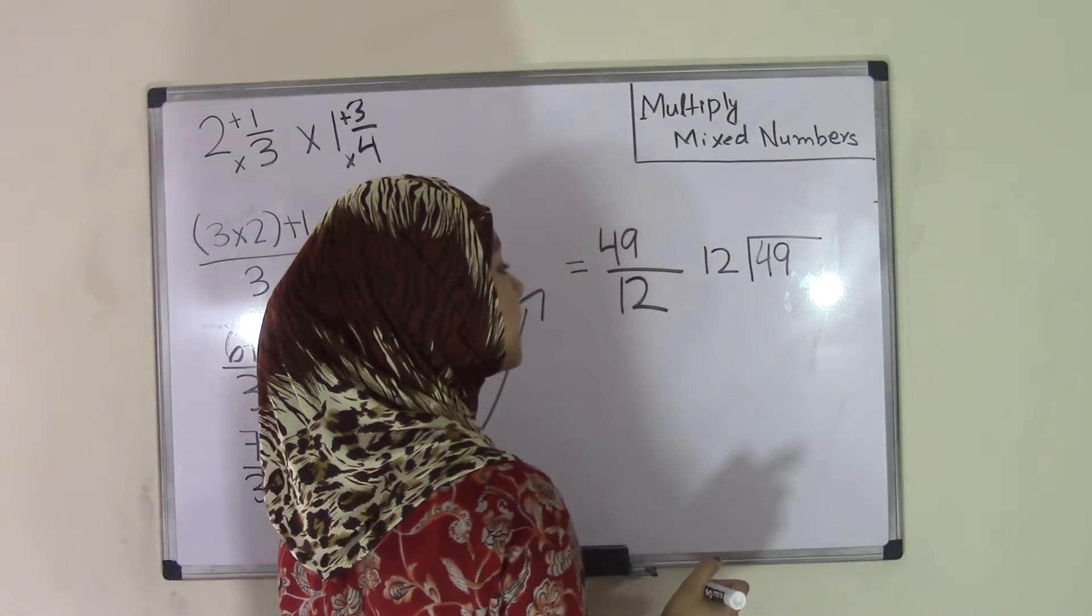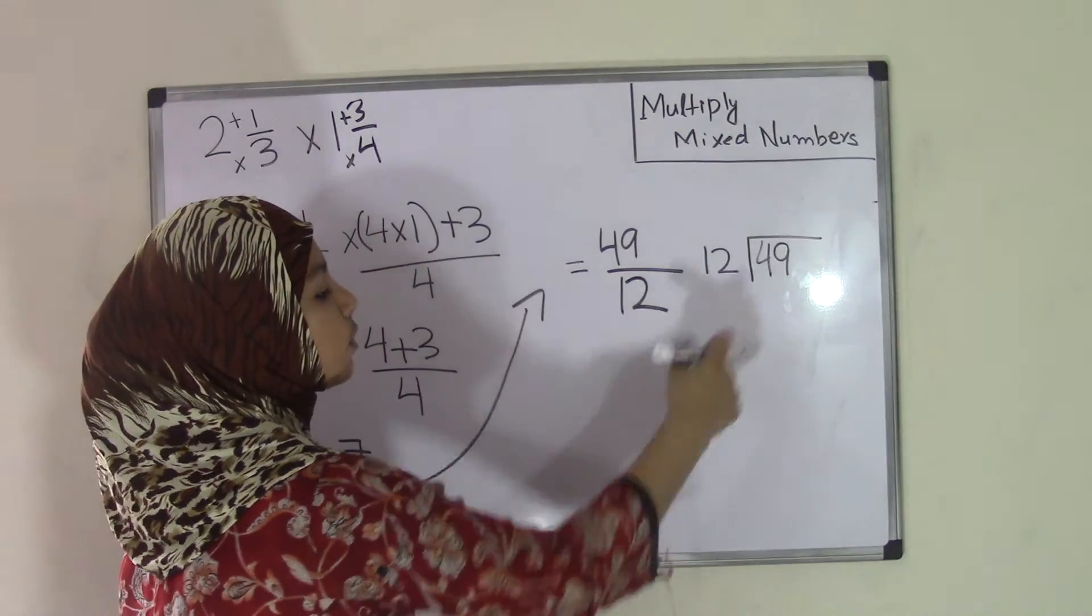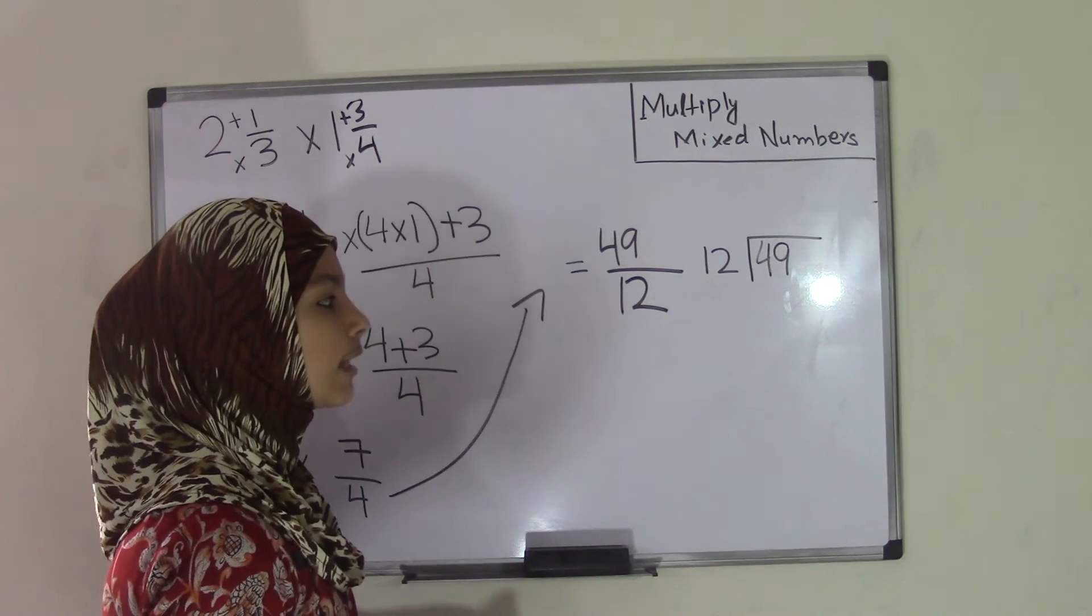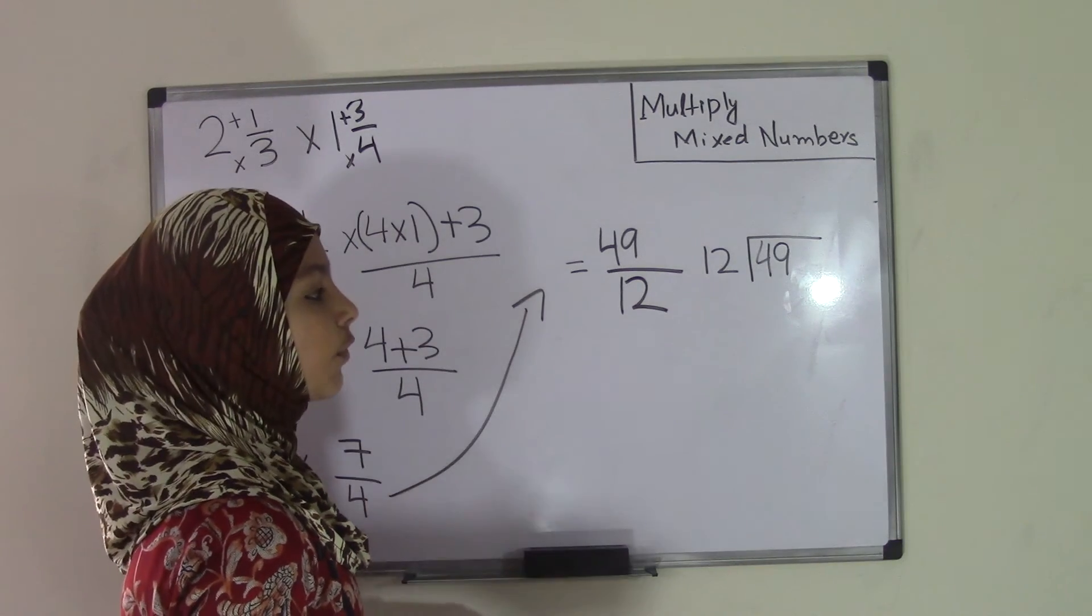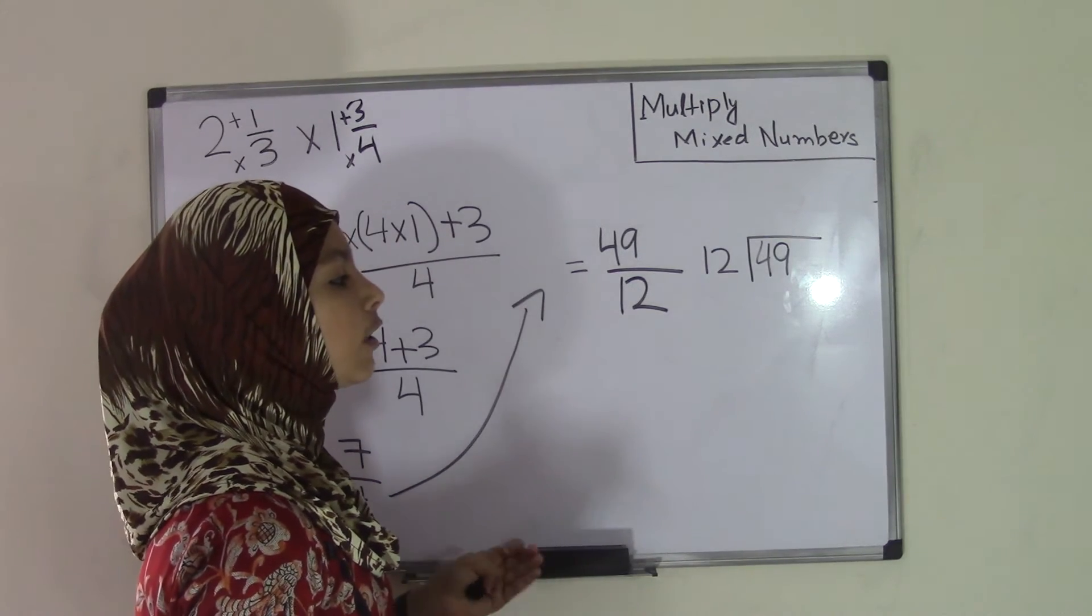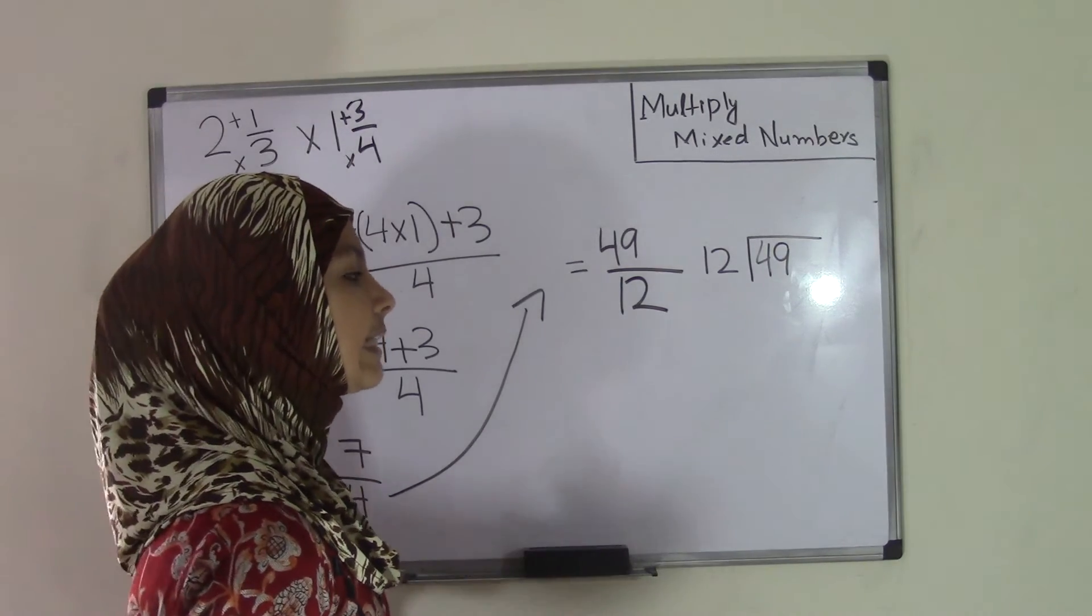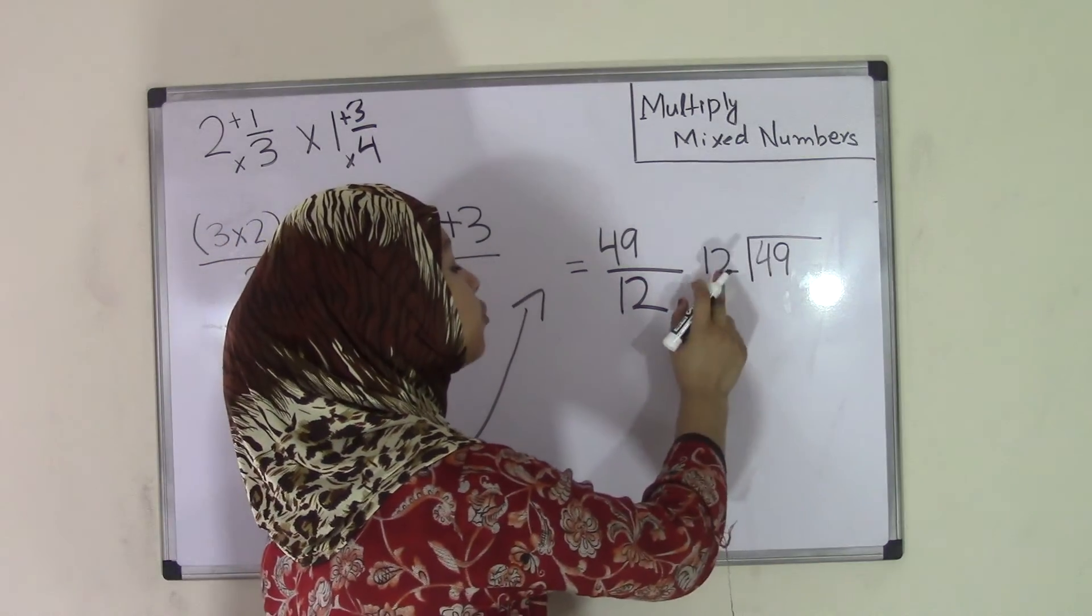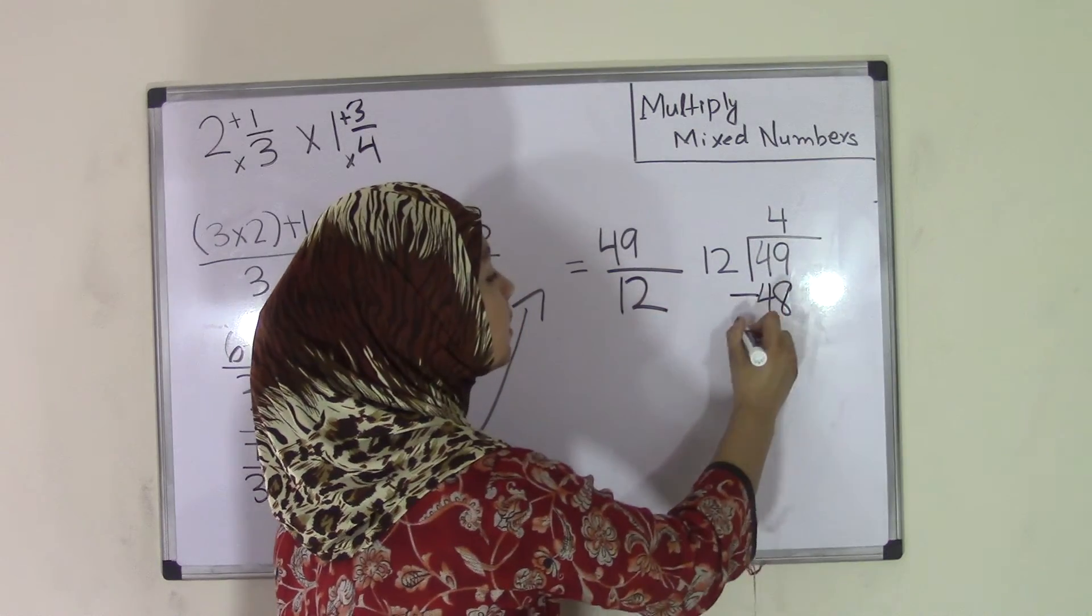So 49 divided by 12, according to our times tables, we know that 12 times 1 is 12, but 12 is less than 49, so we can keep going. 12 times 2 is 24. 12 times 3 is 36. Now, 36 is a bit closer, but maybe we have another product that is closer to 49. We know that 12 times 4 is 48, and 48 is very close to 49. If we were to keep on going and do 12 times 5, that would give us 60, and 60 is greater than 49, so we can't do 12 times 5. So we're going to have to do 12 times 4 to get us 48, and now we have to subtract.